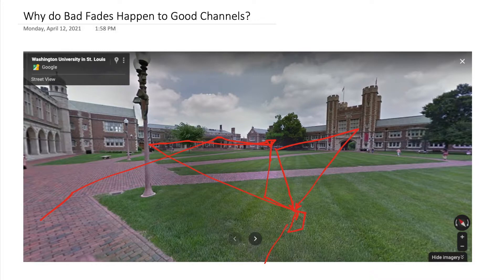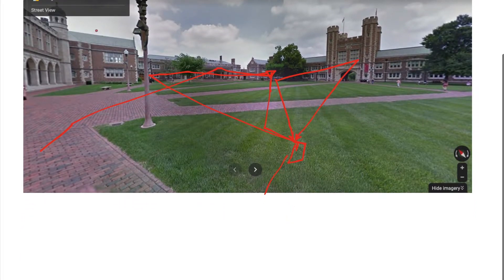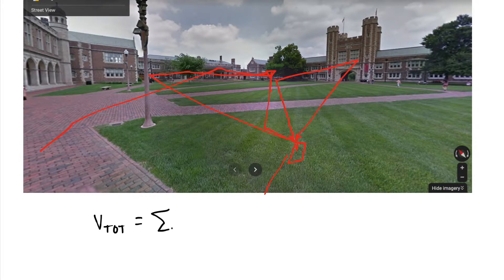All of these paths make up multi-path components. The voltages of those signals add in a phasor sum when they arrive at the receive antenna. The total voltage measured at my antenna is going to be a sum from multi-path 0 to capital L minus 1, where capital L is the total number of multi-path components in my channel.